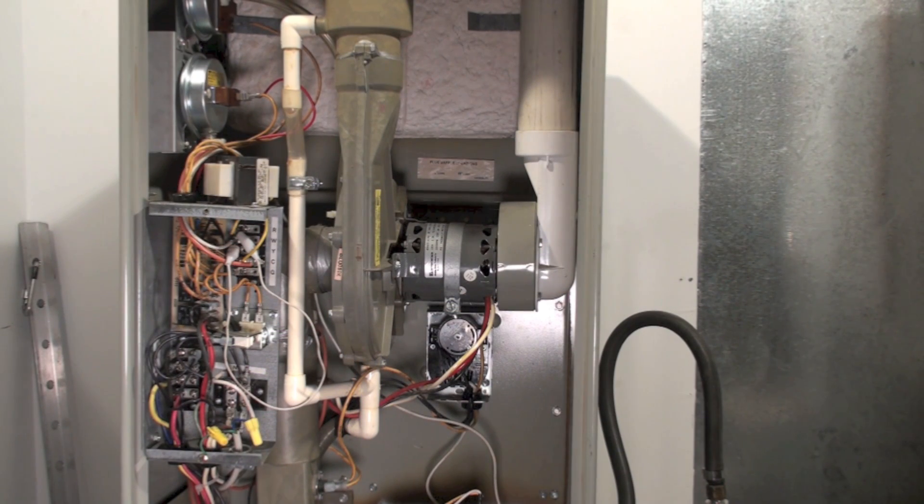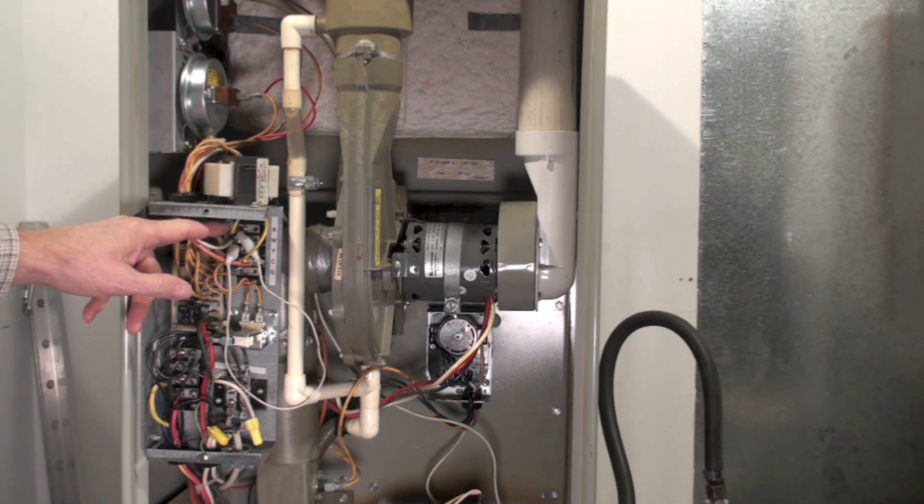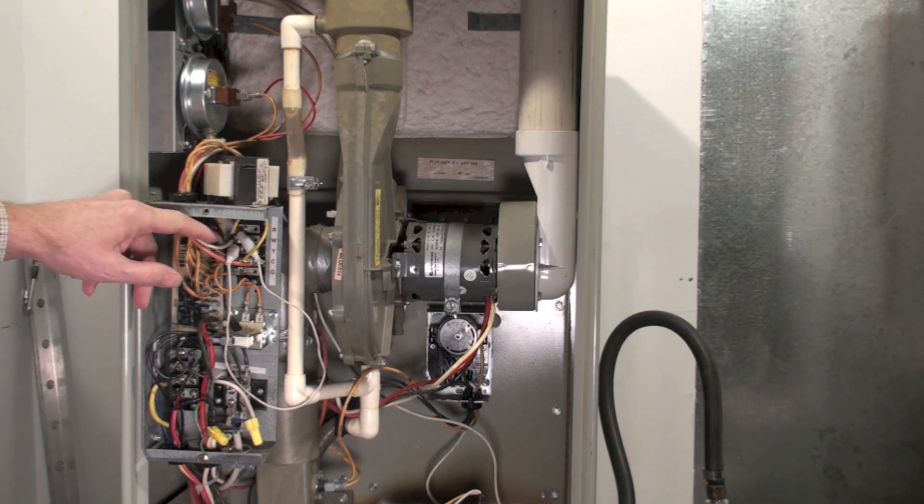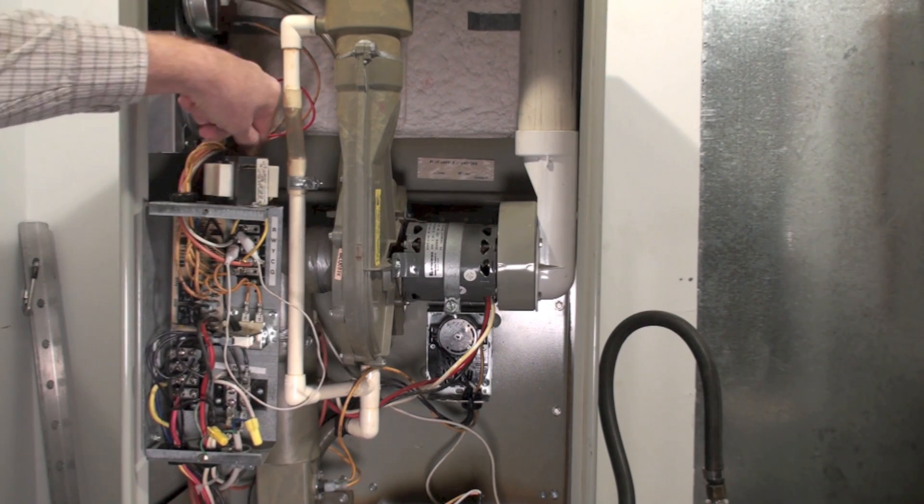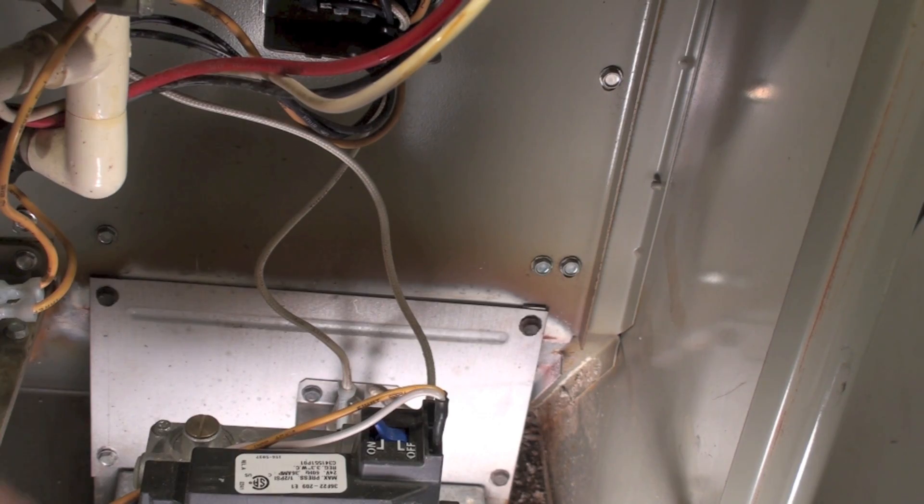This one's on the sequence of the Blue Train gas furnace. We're going to start right here. When the thermostat closes, power goes from R to W. When it hits W, it goes through this wire here.